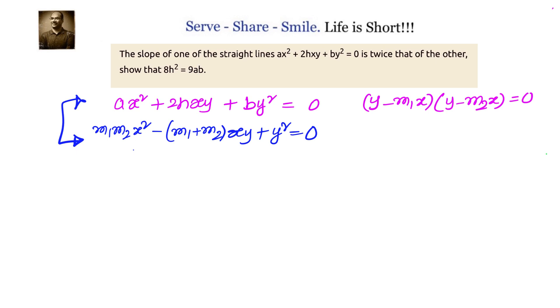Both represent the same pair of straight lines, so their coefficients should be in the same ratio. A/M1M2 = 2H/-(M1+M2) = B/1. From that, we know that M1 + M2 = -2H/B and M1M2 = A/B.